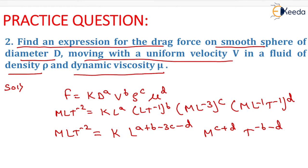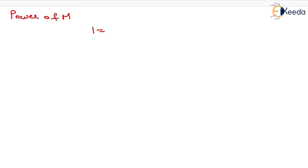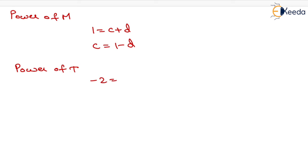We have to equate the powers of M, L, and T on both sides. The power of M gives 1 equals C plus D, so the value of C equals 1 minus D. Equating the power of T gives minus 2 equals minus B minus D, so the value of B equals 2 minus D.